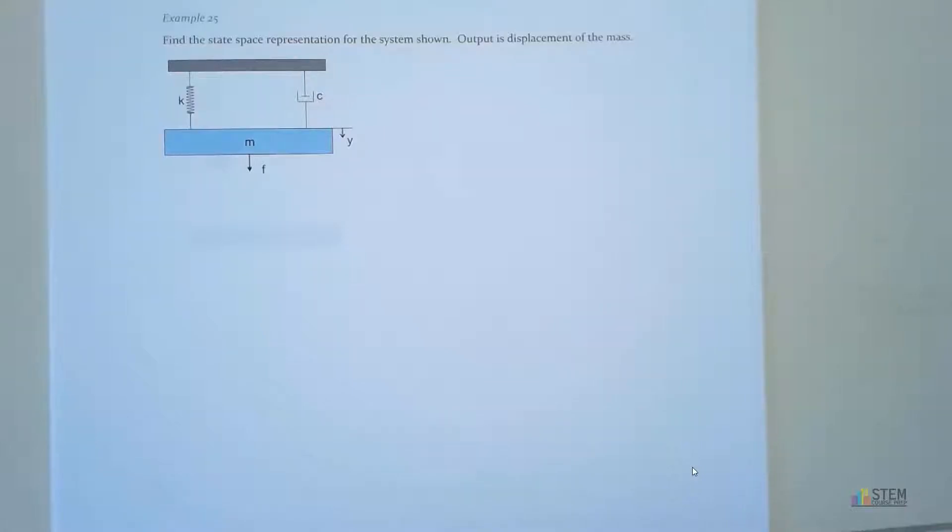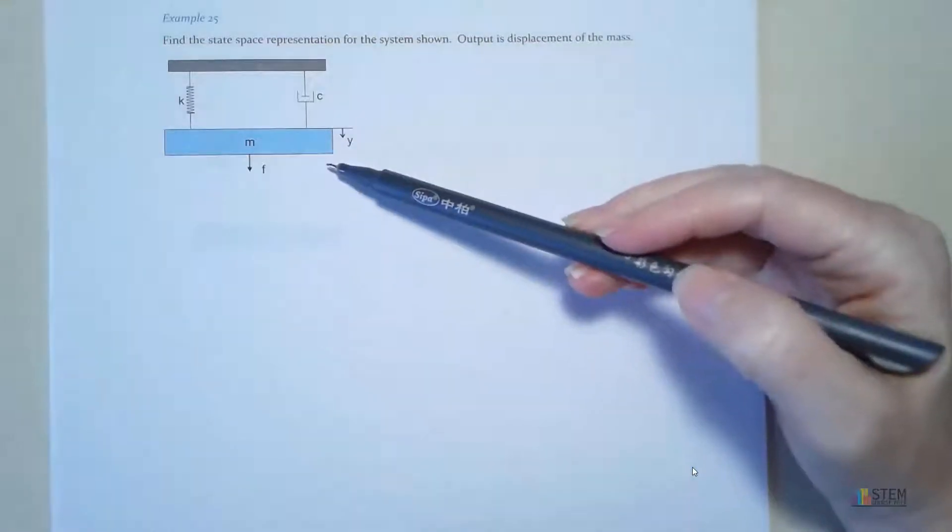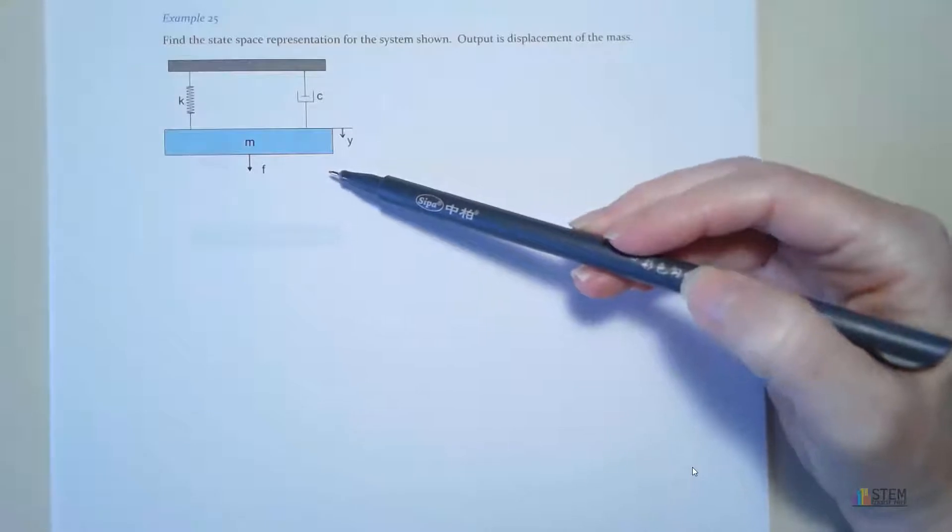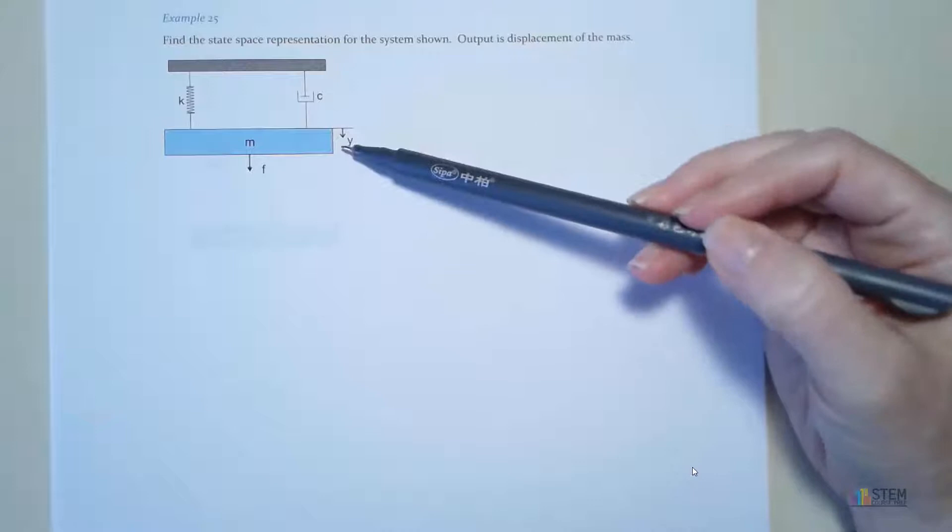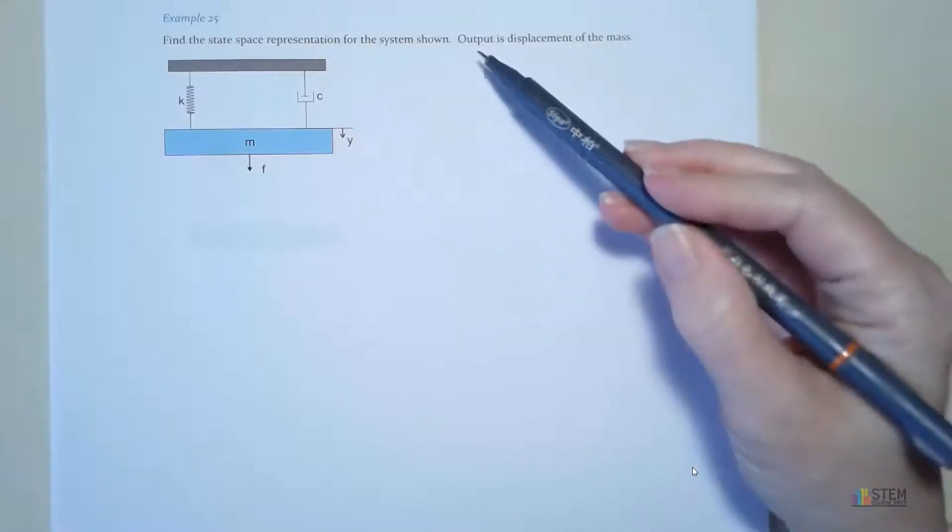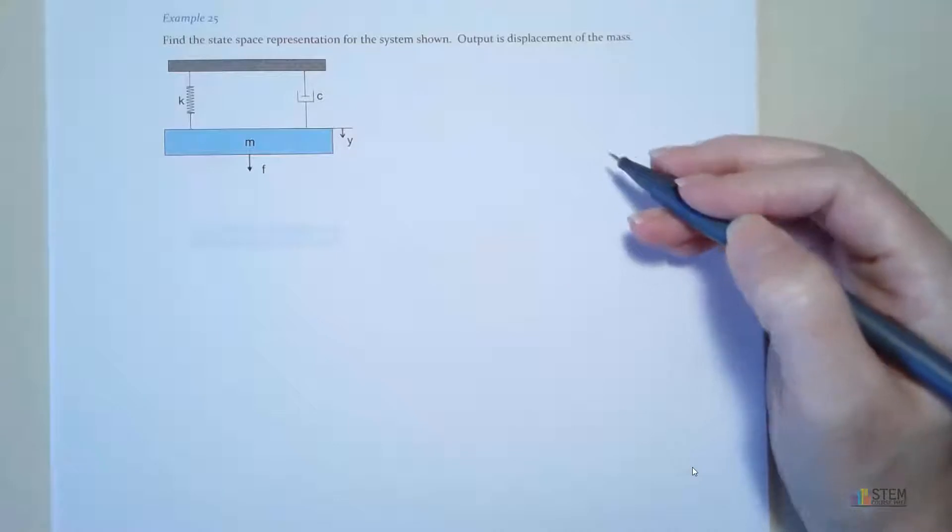Let's do another example. This time we're going to have to do all of the work ourselves. We're not going to have the state variables given to us. Here we've got this system shown - just the basic spring mass damper system. We want to represent this system using state space, and we're told that the output needs to be the displacement of the mass.